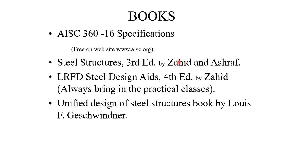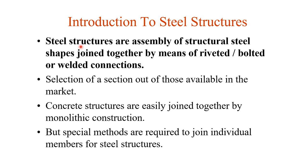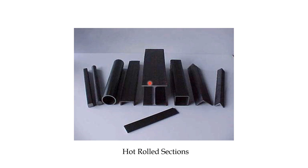Introduction to steel structures: steel structures are assemblies of structural steel shapes joined together by means of riveted, bolted, or welded connections. Here you can see examples — the eye section (I-section), hollow rectangular section, angle section.